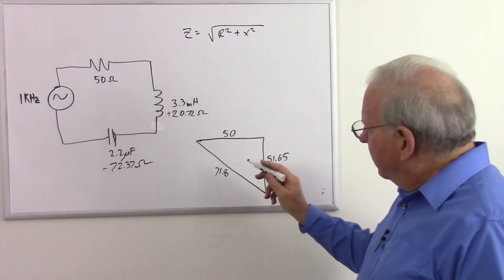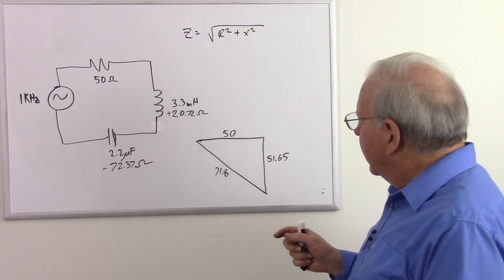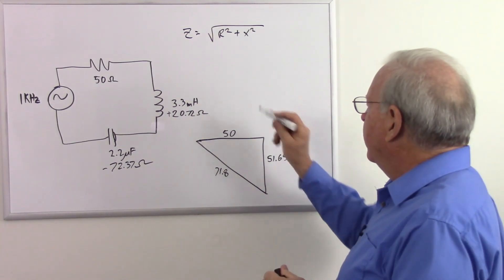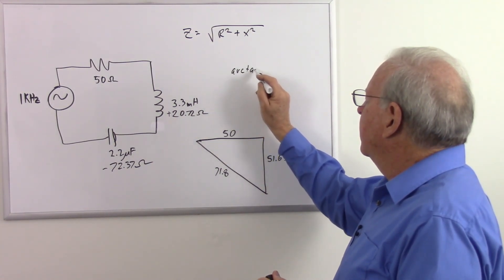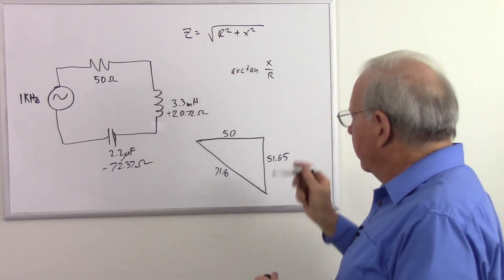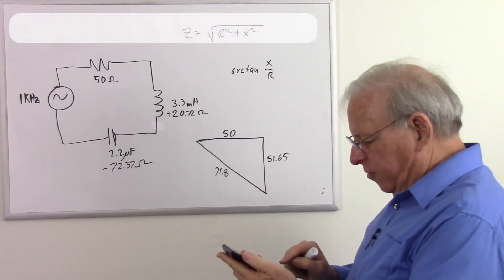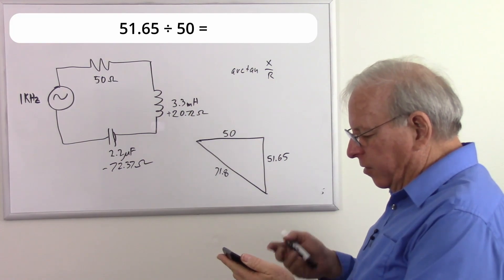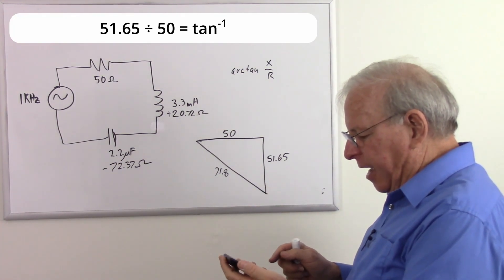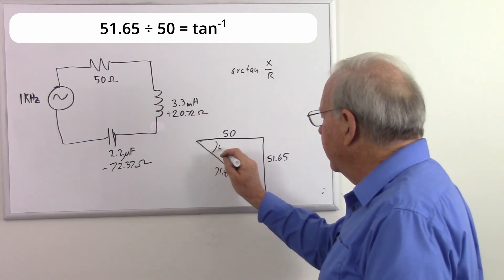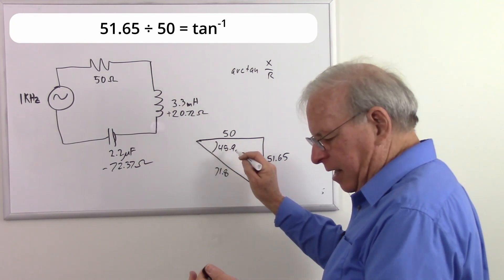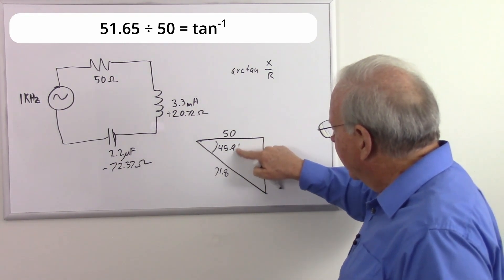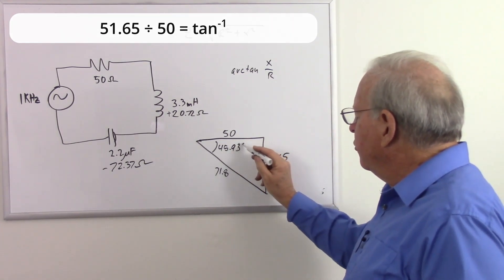With a phase angle, it should be pretty close to 45, don't you think? So let's calculate that phase angle. We have an impedance of 71.8 ohms with a phase angle of, how do we do that? The arctangent of our X over R. So 51.65 divided by 50 equals a number we take the arctangent of, and we got 45.92. 45.93 if we round it up.